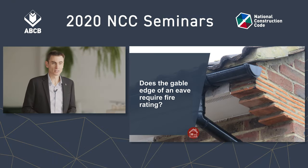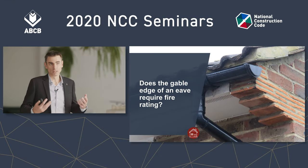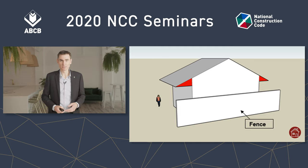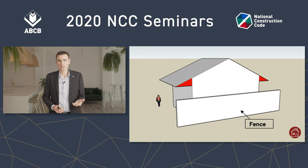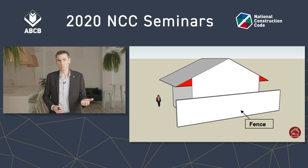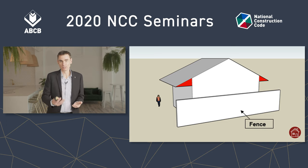Does the gable edge of an eave require a fire rating? What we're talking about is this bit shown in red. When we're talking about the gable, we're thinking of a gable roof and gable end, but the question really is: is this part in red a wall? Because the FRL of course is applied to a wall.